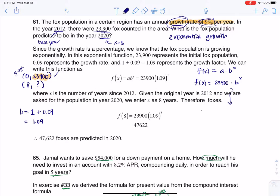So if I forward this problem, I'm there with my exponential model. And to answer the question, how many foxes do I have in the year 2020? Go ahead and plug in eight. So if I find F of 8, that's going to be 23,900 times 1.09 to the eighth. And when we plug that into our calculator, we're going to get 47,622 foxes. So that's where I get that number.